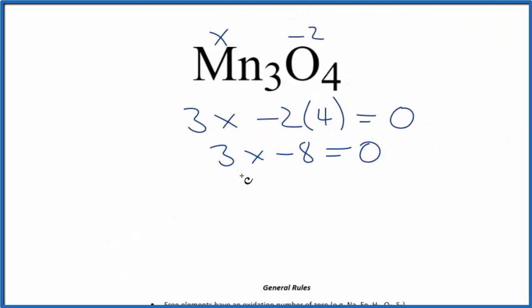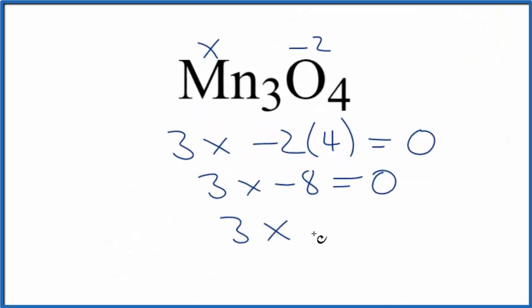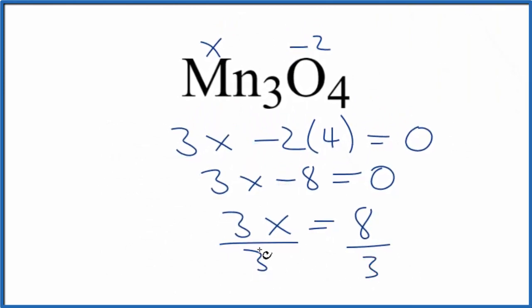Let's move this. Then we'll add 8 to both sides. 3x equals 8. Divide both sides by 3, and we end up with x equals 8 thirds. So the oxidation number on each manganese, that's going to be a positive 8 thirds.